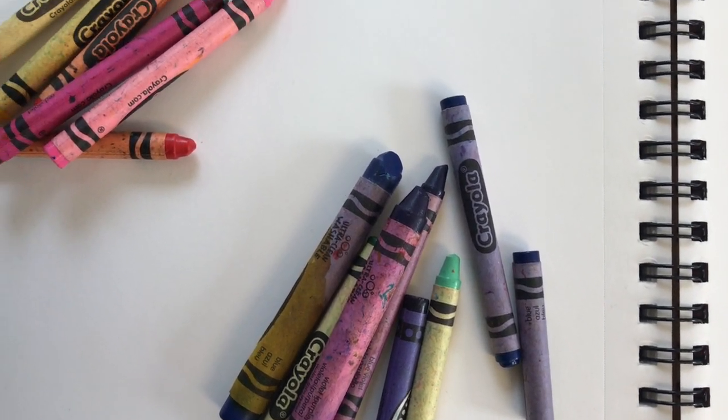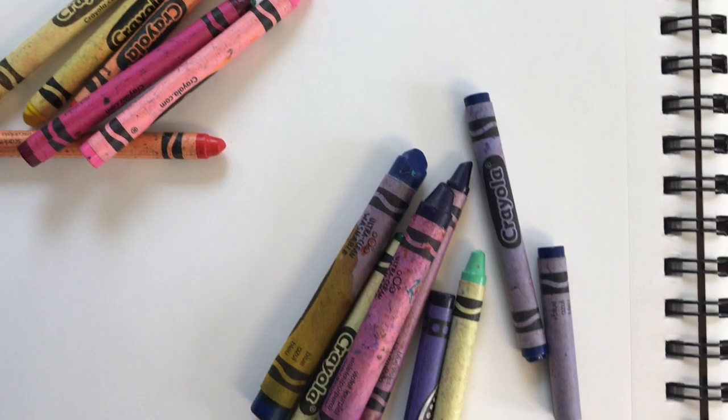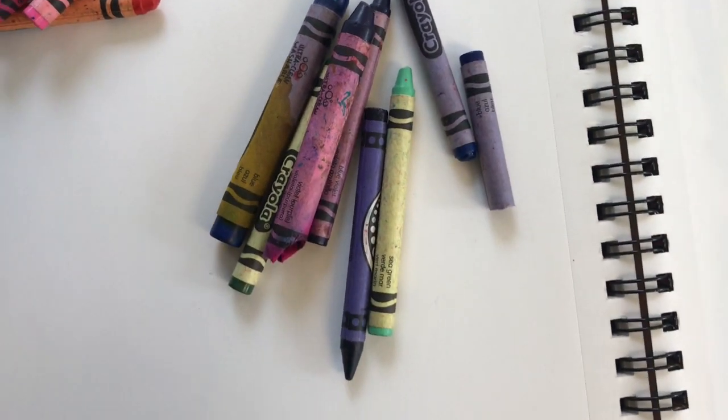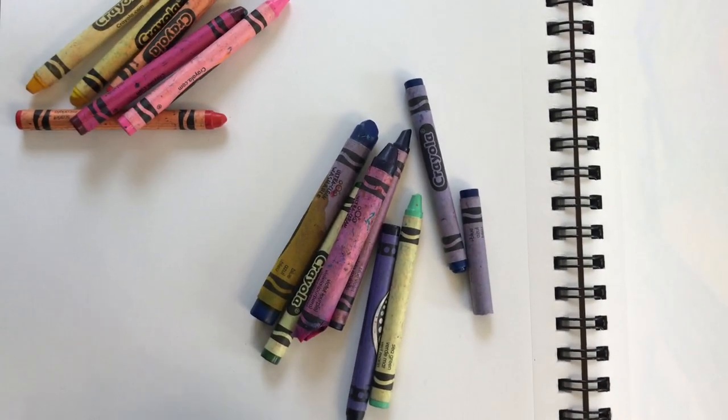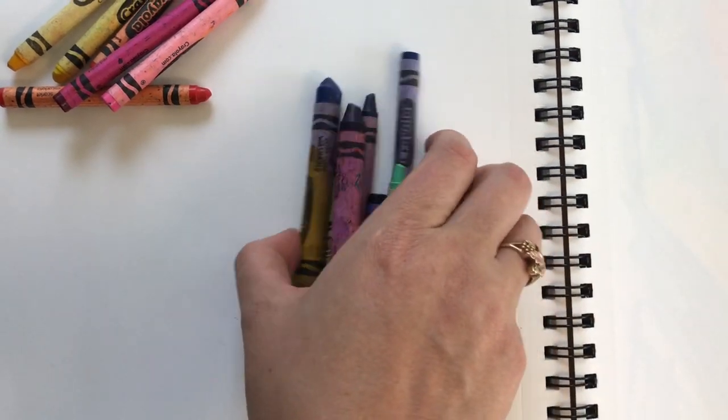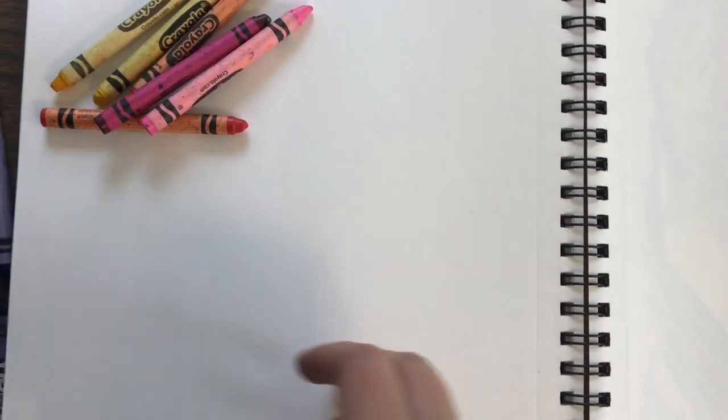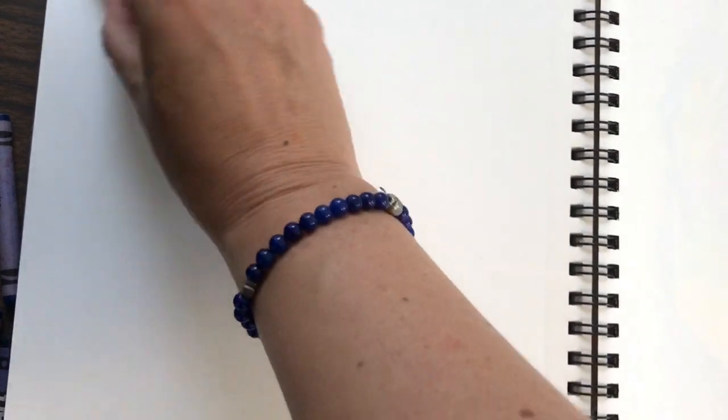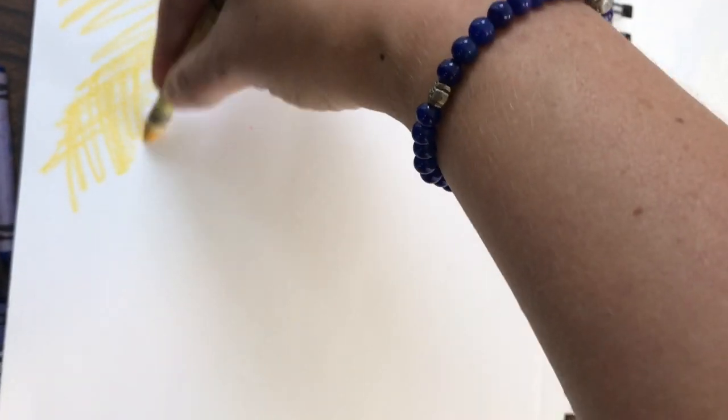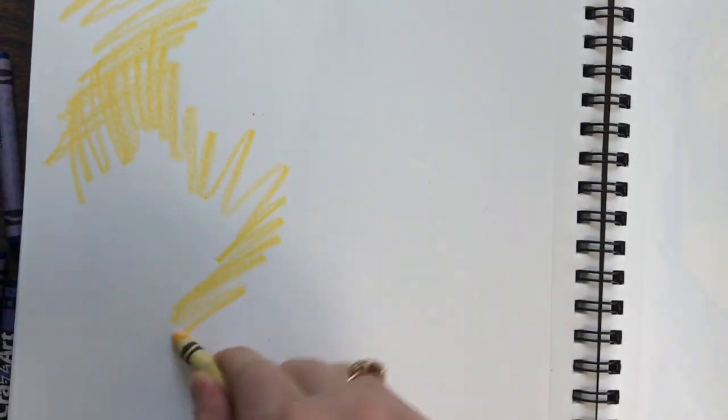Currently I have some crayons separated out into warm colors and cool colors. So the first thing we need to do is make something worth cutting up. I am going to take some warm colors and fill in this whole page. All sorts of colors. This is the fun part.